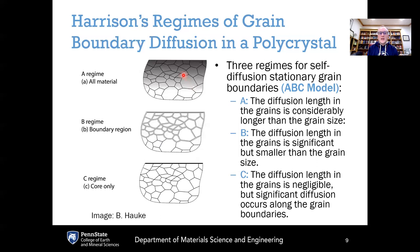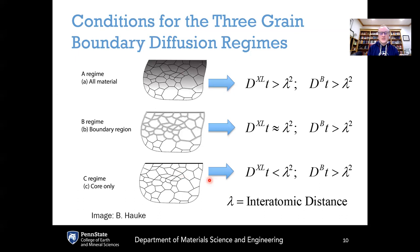In the A regime, the diffusion length in the grains is considerably longer than the grain size, meaning diffusion is happening on comparable time scales across the crystals themselves and the grain boundaries. In the B regime, the diffusion length in the grains is significant but smaller than the grain size — grain boundary diffusion is much faster, but there is still some diffusion within the grains from the grain boundaries. In the C regime, diffusion within the grains is negligible, and the only significant diffusion occurs along the grain boundaries themselves — hence the word 'core,' meaning diffusion is confined to the grain boundaries.